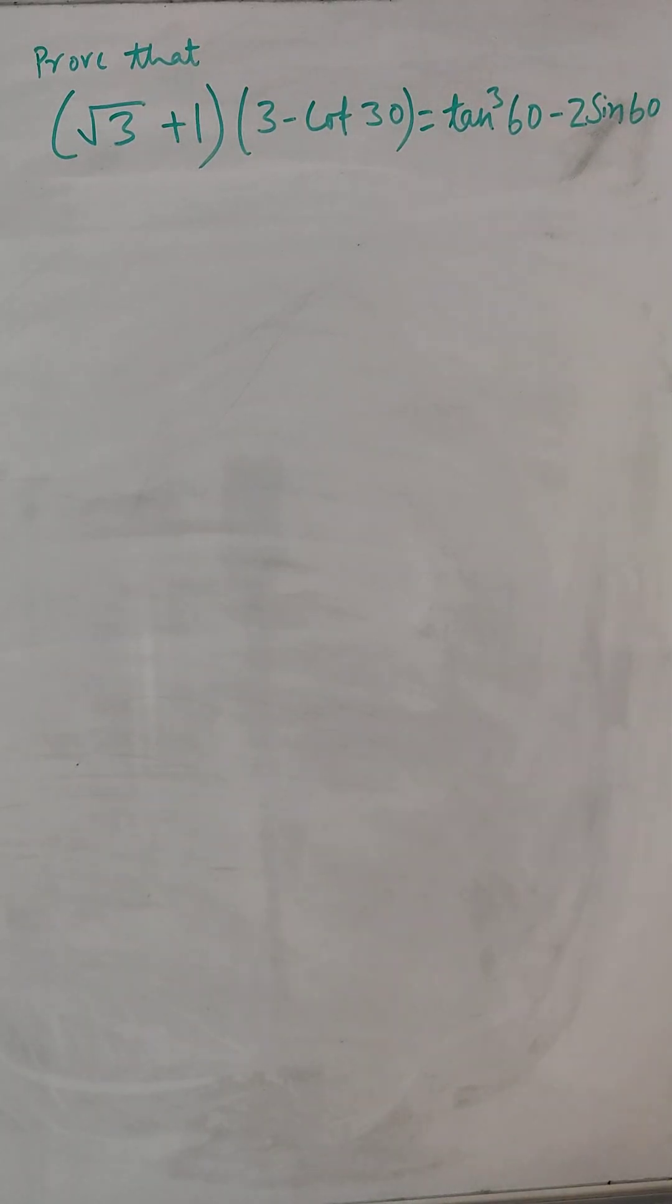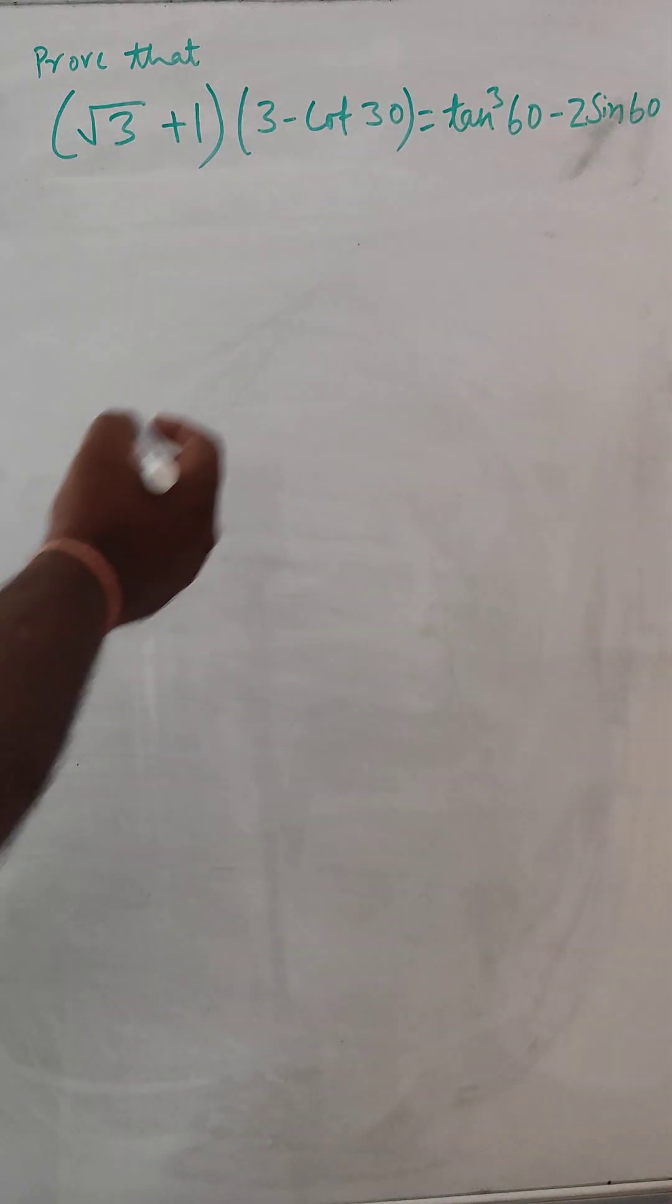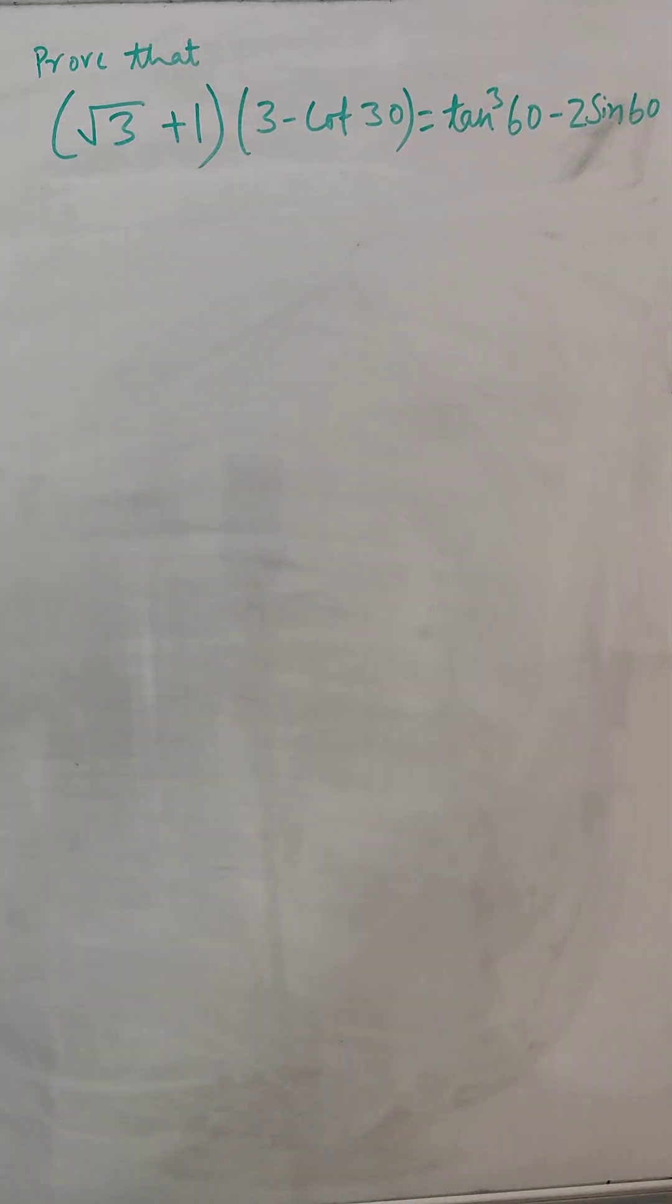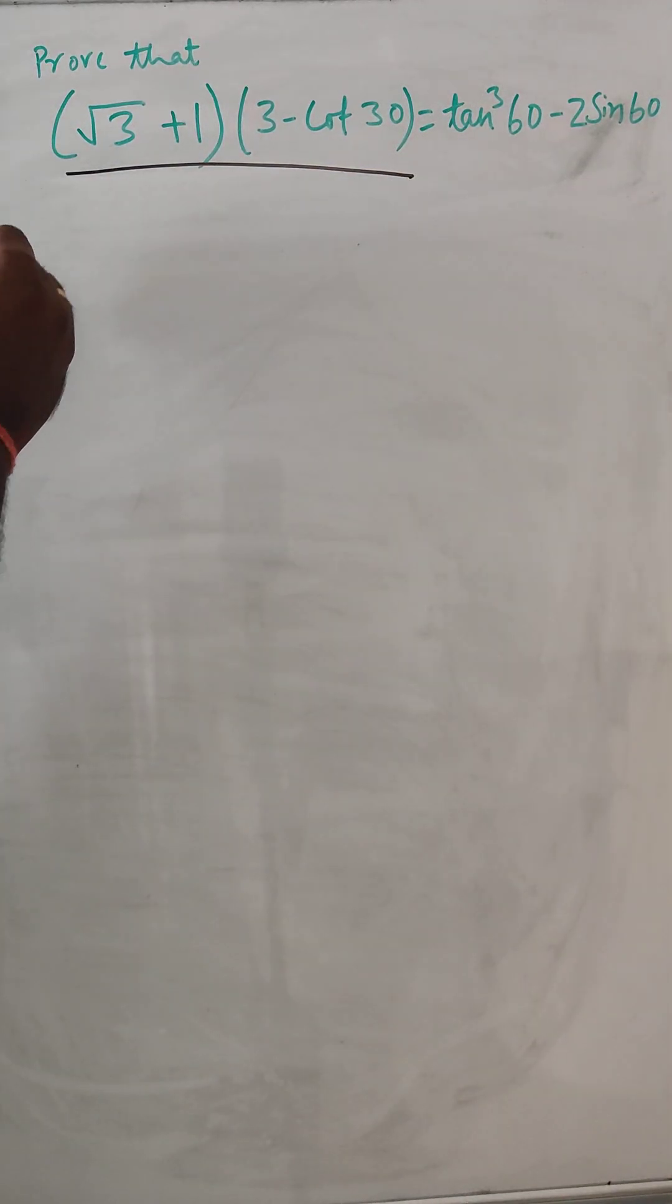Hello everyone, so today we are going to solve this problem where we have to prove root 3 plus 1 into 3 minus cos 30 is equal to tan 60 minus 2 sin 60.